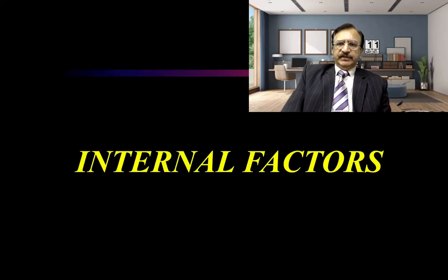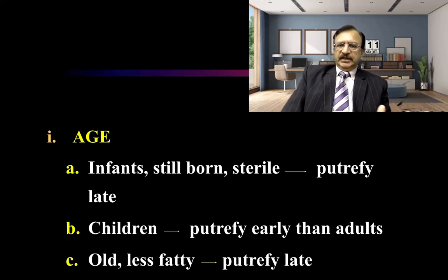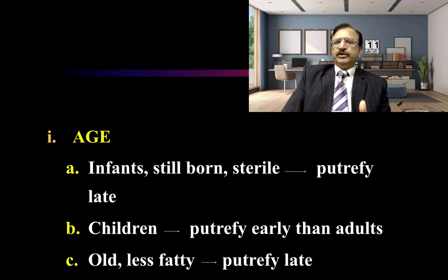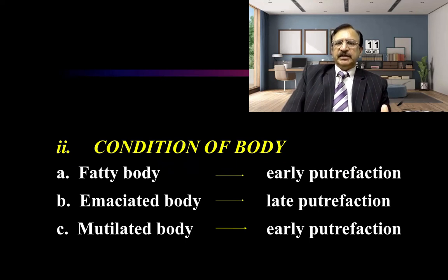Regarding internal factors: age plays a role — stillborn infants are sterile and putrefy late. Children putrefy earlier than adults. The elderly, being less fatty, putrefy late. Regarding condition of the body: fatty bodies putrefy early, emaciated bodies putrefy late, and mutilated bodies putrefy early.